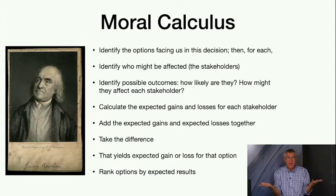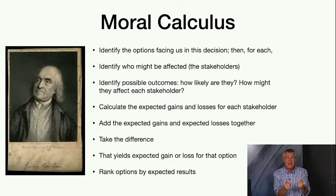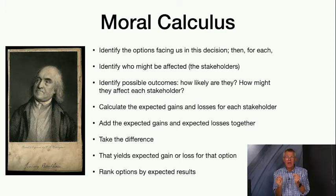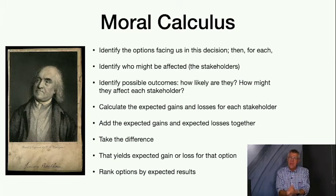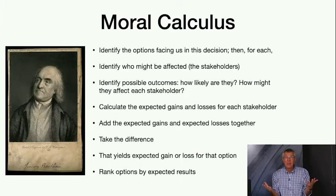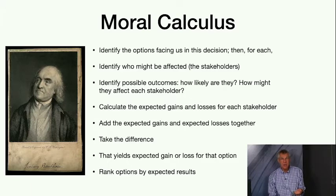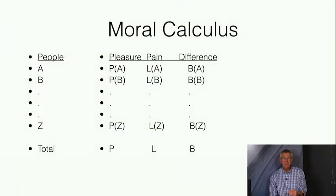Then we identify the possible outcomes. How likely are these outcomes? How might they affect each of those stakeholders? We calculate, for each option and each possible outcome, the expected gains and losses for each stakeholder. We look at what would happen under each outcome to that stakeholder, judge the effect on their happiness, think about the probability of that outcome, and put it all together to judge the expected effect. Then we add all expected gains and expected losses together, take the difference, and that yields the expected gain or loss for all stakeholders together—for the entire community—for that option. Then we rank the options by their expected results.